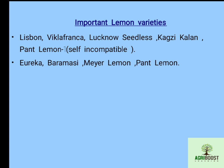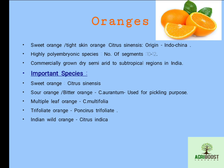Important varieties of lemon are Lisbon, Villafranca, Lucknow Seedless, Kagzi Kalan, Panth Lemon, Eureka, Bara Masi, and Mayor Lemon. Among these, Panth Lemon is self-incompatible in nature, meaning it has an inability of pollen to fertilize its own flower.